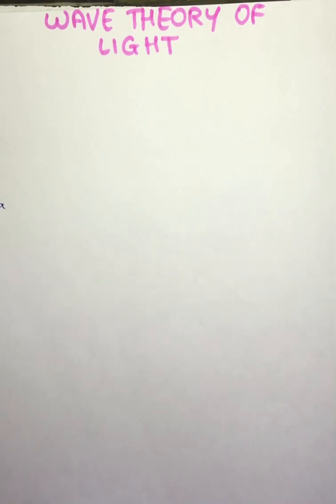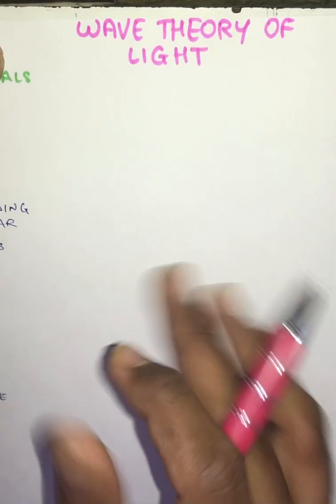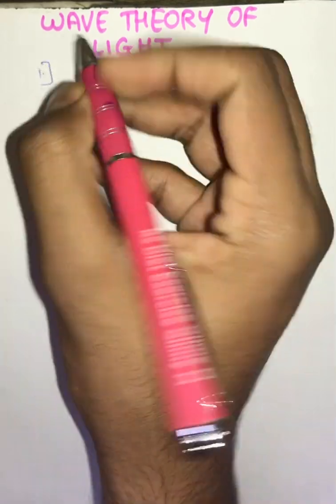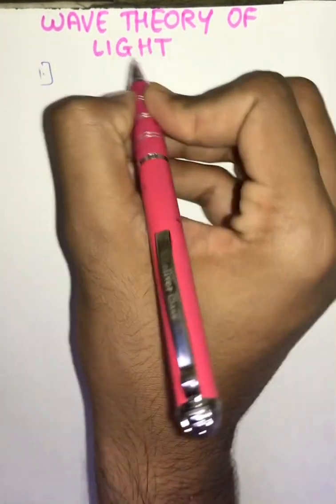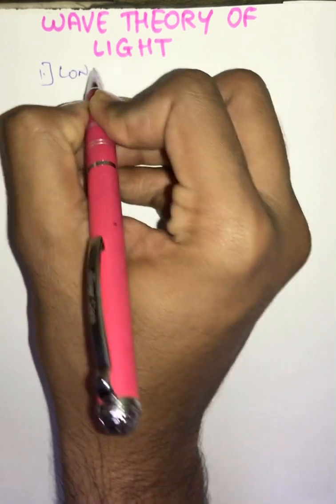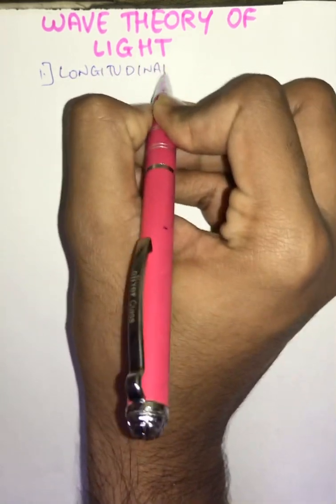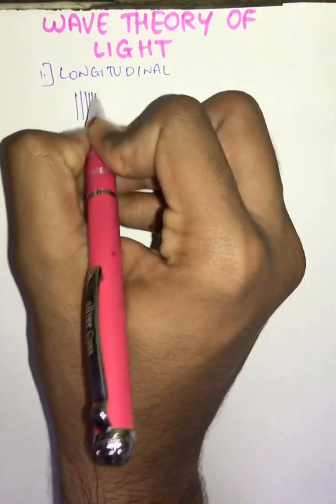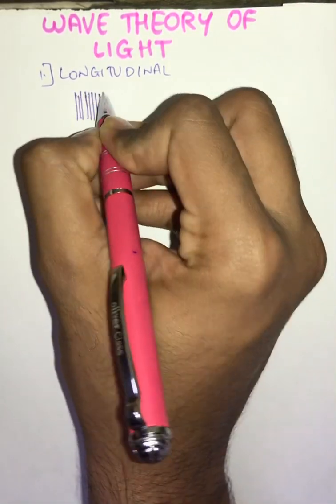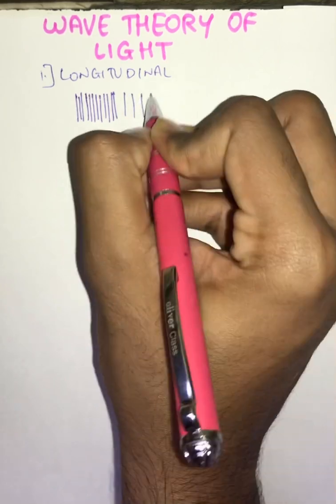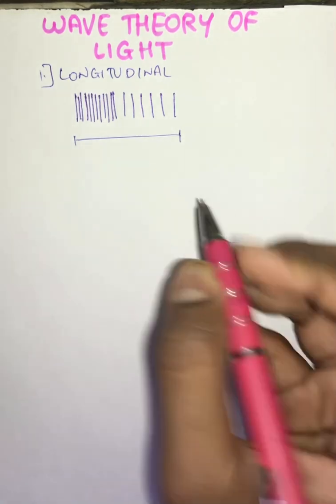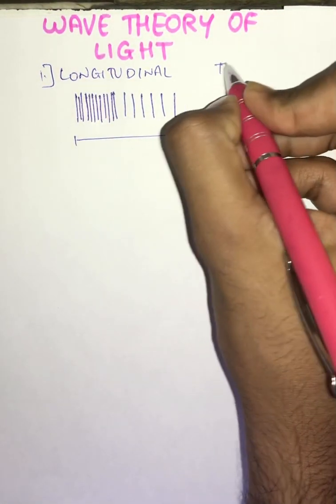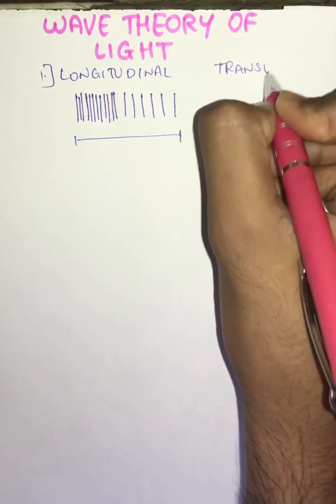According to the first characteristic, they said that light travels in the form of longitudinal waves. What is a longitudinal wave? At one end we have compression and at the other end we have rarefaction. This completely forms one longitudinal wave. But later on it was proved that light does not travel in the form of longitudinal waves, but it travels in the form of transverse waves.